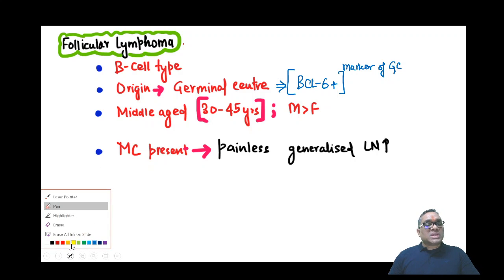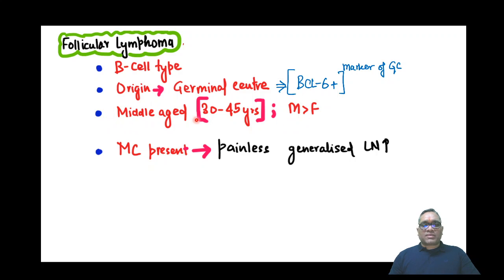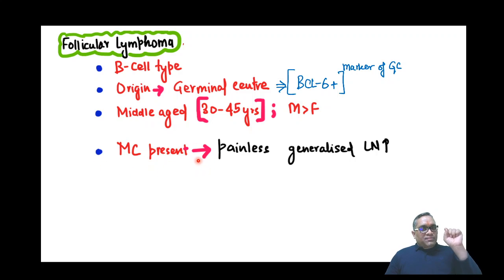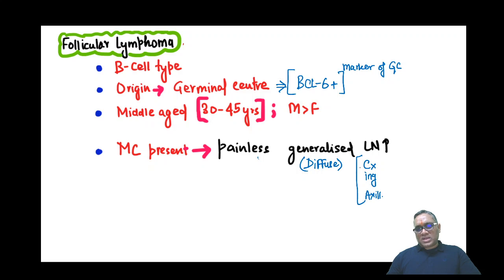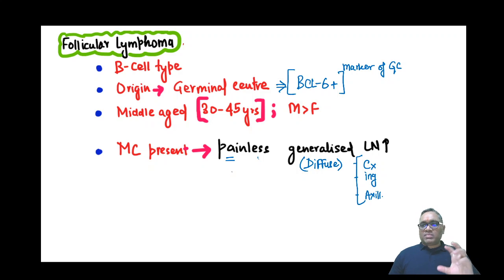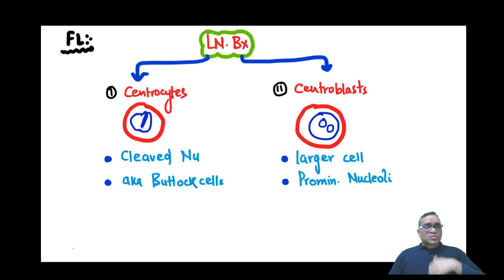Who will be affected? Usually it is middle-aged individuals, 30 to 45 years old, and mostly males are affected — middle-aged males, M for middle-aged, M for males. The most common presentation in these patients is painless, generalized (diffuse) lymph node enlargement. The examiner will give history of cervical, inguinal, and axillary lymph nodes all being enlarged.